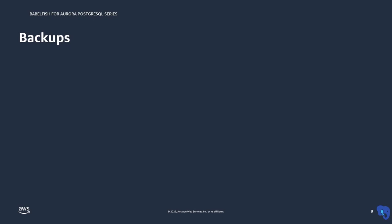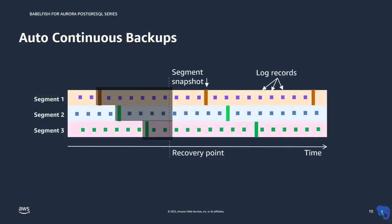In backups, Aurora does continuous backup so you don't need to schedule any backups. It takes snapshots of the 10 GB segments and logs in parallel, directly to Amazon S3. These backups won't cause any performance impact to your applications. In the event of restoring to a brand new volume, hundreds of storage nodes in the storage cluster can all access Amazon S3 at the same time and apply the logs simultaneously, providing the fastest possible restore time.